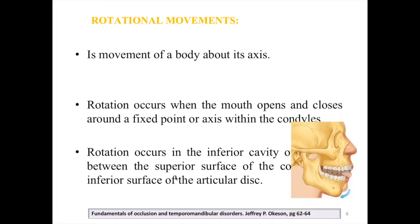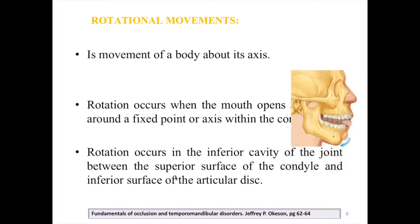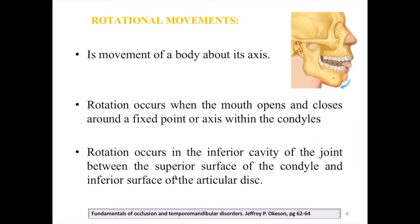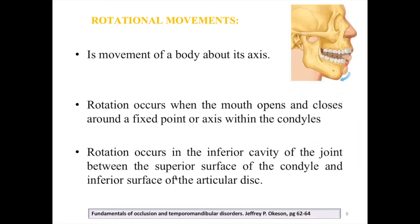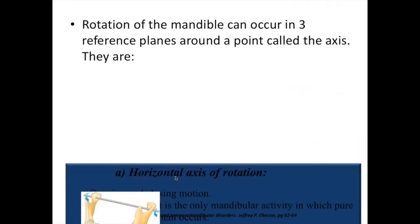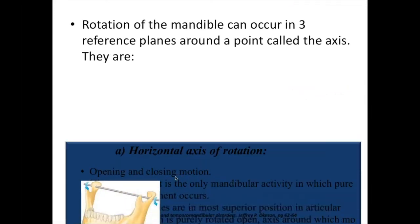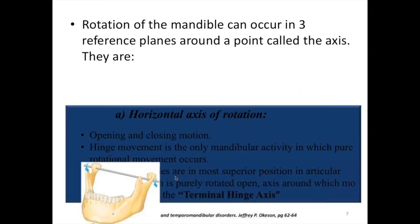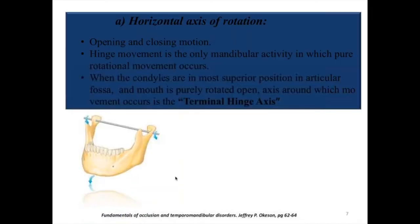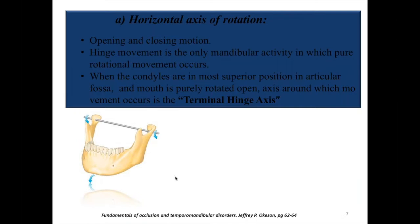Rotation of the mandible can occur in three reference planes around a point called the axis. The first is the horizontal axis of rotation, which is the opening and closing motion. Hinge movement is the only mandibular activity involving pure rotational movements. When the condyles are in the most superior position in the articular fossa, the mouth is purely rotated open. The axis around which this movement occurs is the terminal hinge axis.